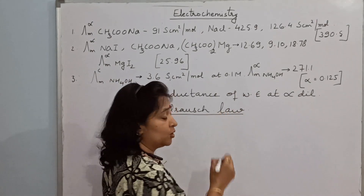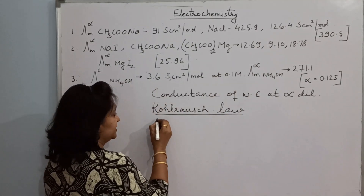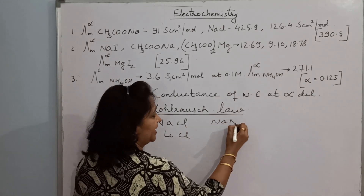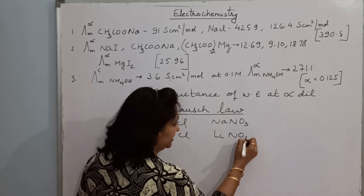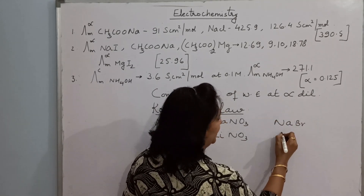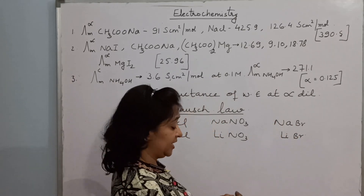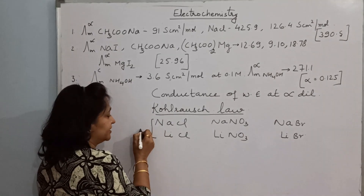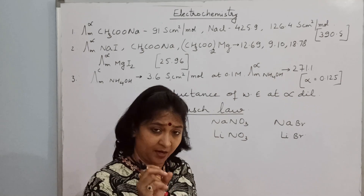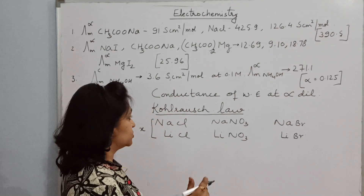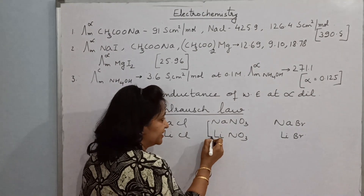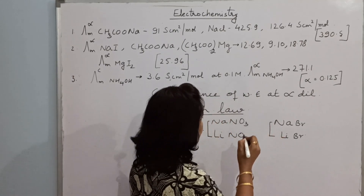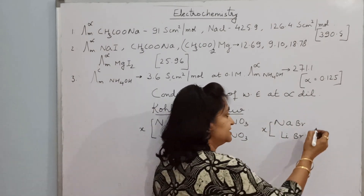This is called Kohlrausch's Law. Kohlrausch's Law deals with different electrolytes. Suppose we take NaCl and LiCl, NaNO3 and LiNO3, then NaBr and LiBr. When we study their conductances, we see that the difference between each pair of conductances is the same particular value — the same value in each condition.